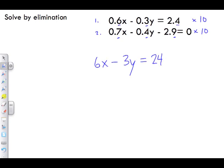Equation two, same thing. We're going to multiply it all by 10 and we're going to be left with 7x minus 4y, or sorry, minus 29 equals 0.